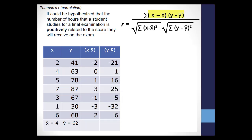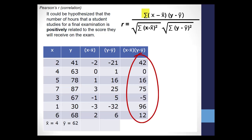The formula tells us to multiply these two scores together. So you have negative 2 times negative 21, or 42. Then 0 times 1 is 0, and so on. Sigma tells us to add all of these products together, which is 236. That means that 236 is what goes in the numerator of this formula.